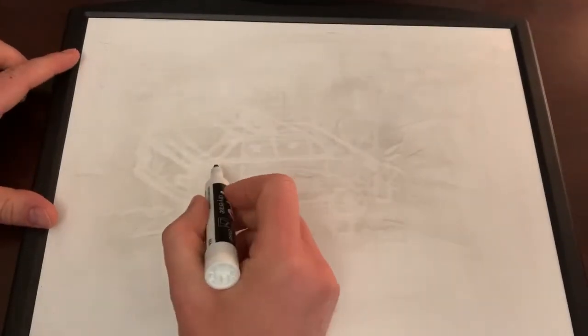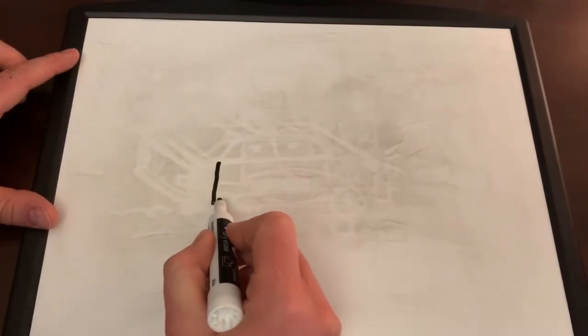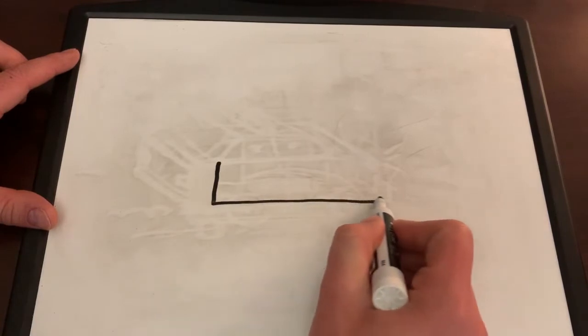Hello everybody, this is Officer Ryland with the Colorado Springs Police Department. Today I want to teach you how to draw a very simple police car.